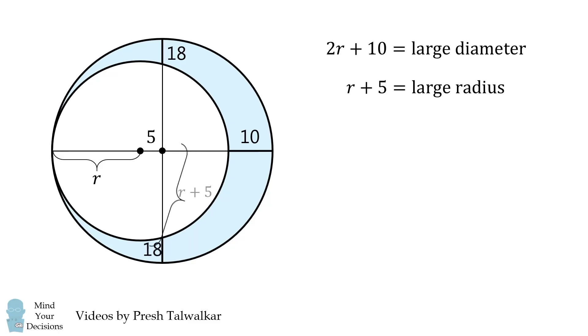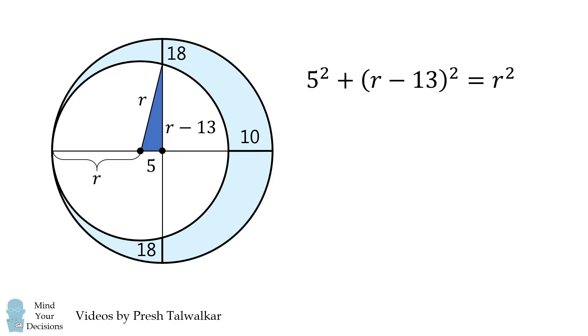We then calculate this vertical distance, and it ends up being R minus 13. So we get a right triangle, and we again use the Pythagorean theorem. We then solve for R and get that R is equal to 97 over 13.